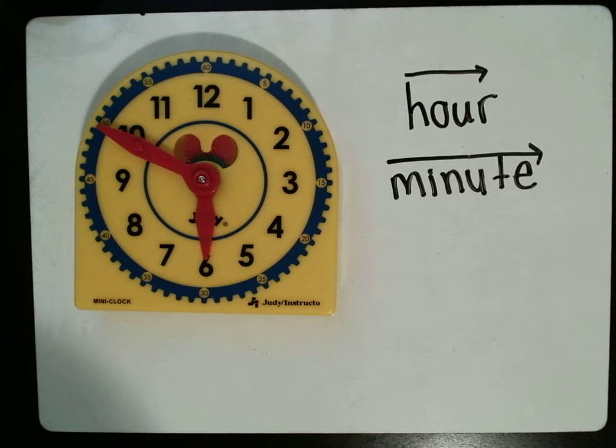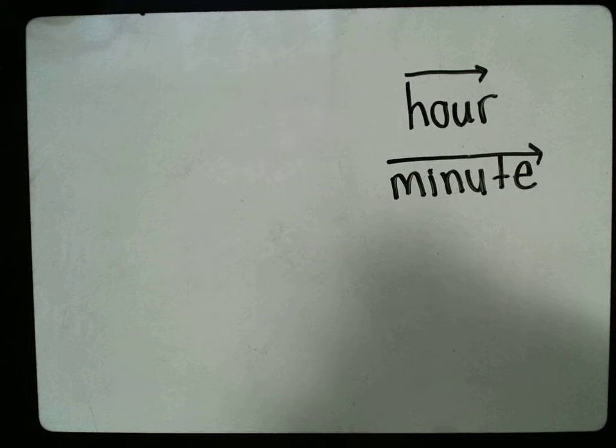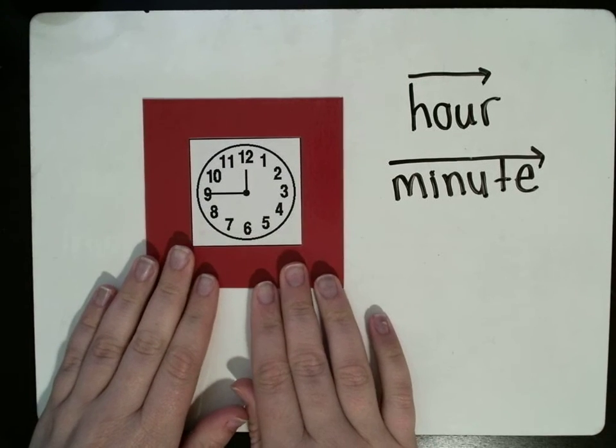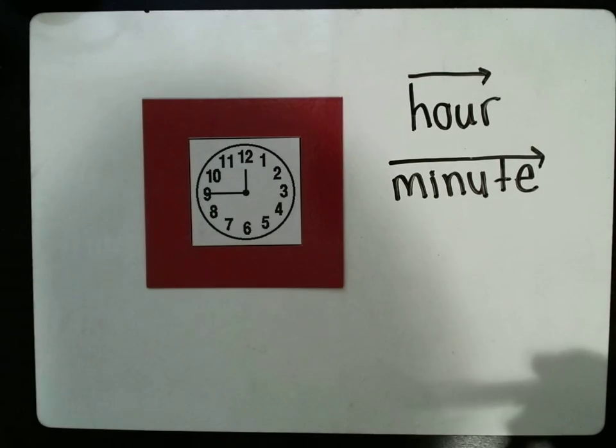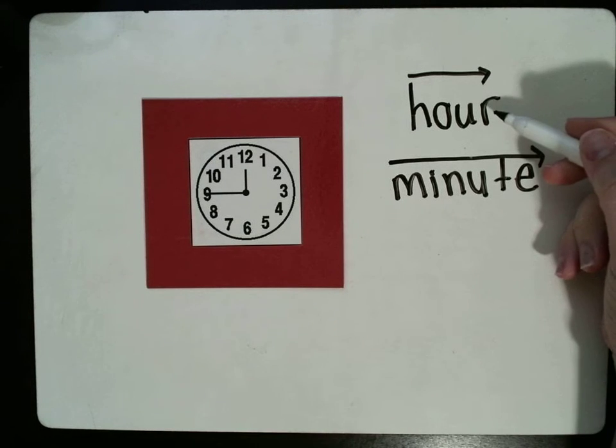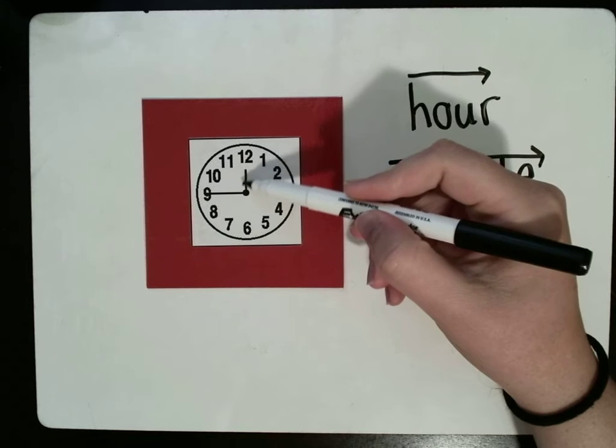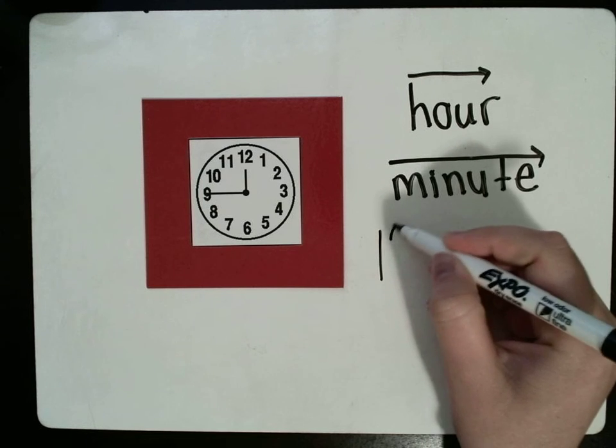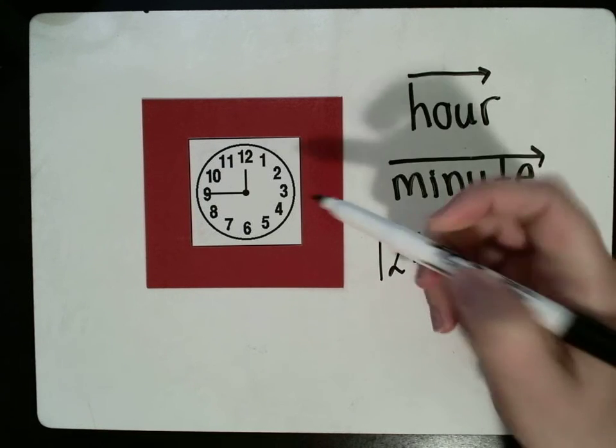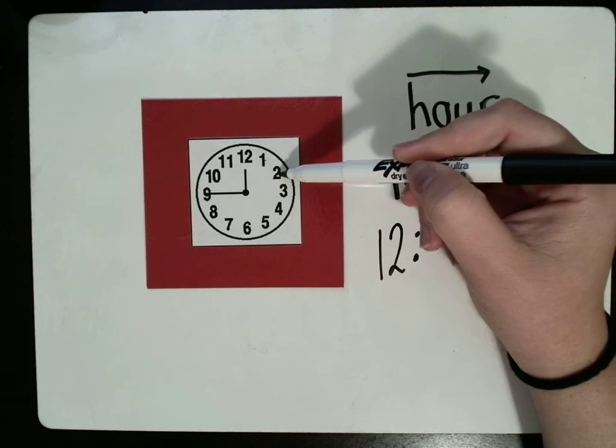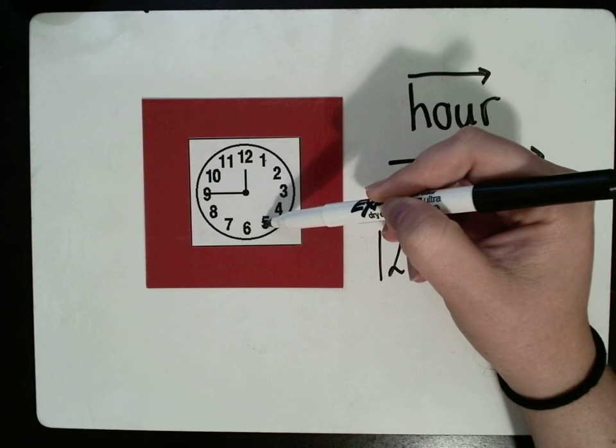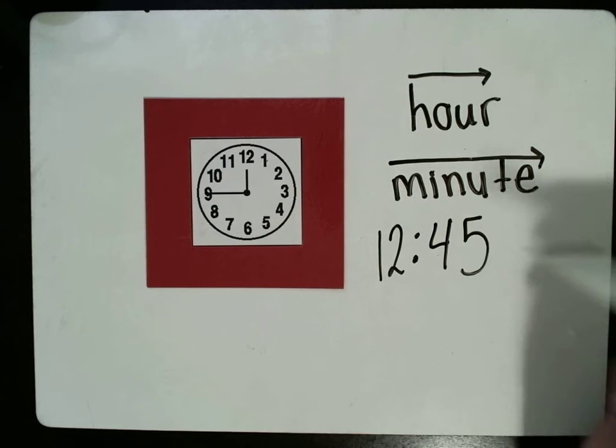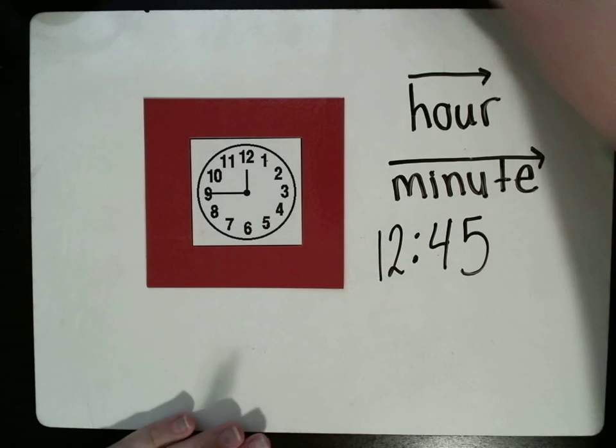So, I have a few clocks that we're going to look at. So, here is our first one. We have, remember, hour hand is the shorter one. The minute hand is the longer one. So, right now, the hour hand is on the 12. The minute hand, we have to count 5, 10, 15, 20, 25, 30, 35, 40, 45. So, right now, this clock is showing us 12:45.